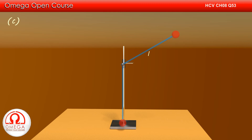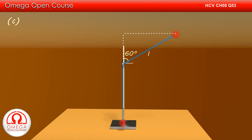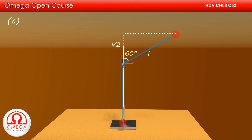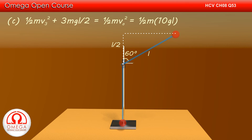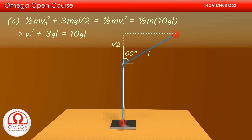In Part C, the string makes an angle of 60 degrees with the upward vertical. Since cos 60° = 1/2, the height of the bob above the point of suspension is L/2, so the bob is at height 3L/2 from the lowest position. If V3 is the speed at this position, by conservation of energy: ½mV3² + 3mgL/2 = ½m(10gL), giving V3² + 3gL = 10gL, or V3² = 7gL.